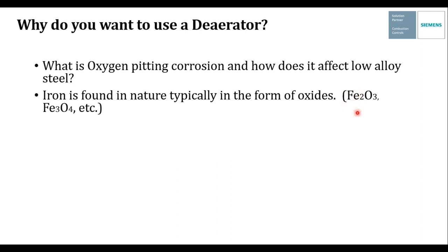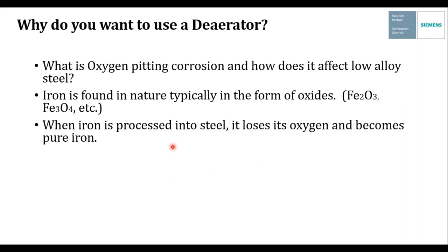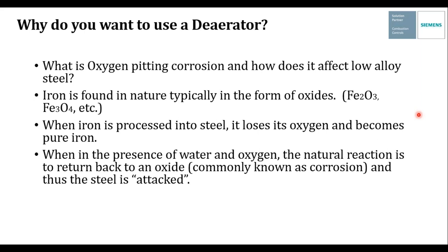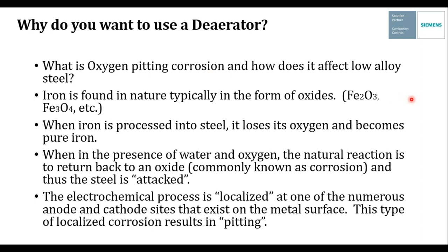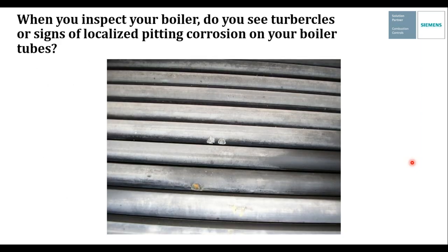Iron is found in nature typically in the form of an oxide — mother nature likes to take things down to their basic forms, in this case Fe₂O₃ and Fe₃O₄. Iron oxides are a very stable form found in nature. Fe comes from the Latin word 'ferrum,' which translates to iron. When iron is processed into steel it loses its oxygen and becomes pure iron. When in the presence of water and oxygen, the natural reaction is to return back to an oxide — commonly known as corrosion. So oxygen pitting can occur and the electrochemical process is localized at anode and cathode sites on the metal surface, resulting in pitting.